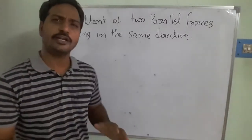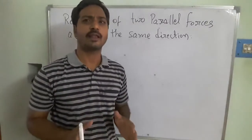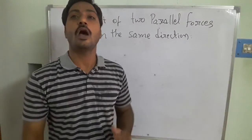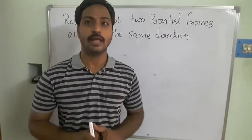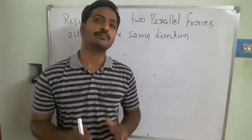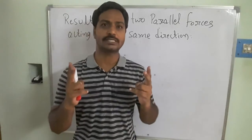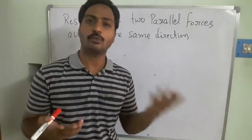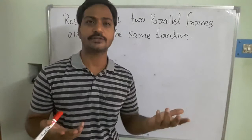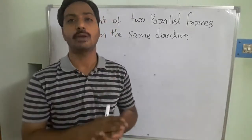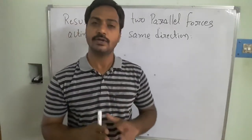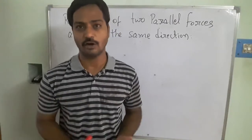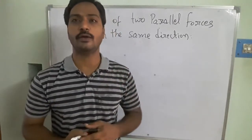After the discussion of the different types of parallel forces in the last video, we are now going to learn how to find the resultant component. As we know, when a body is subjected to two forces, it may not move in either one of the force directions — it will move in the resultant direction, as seen in the last class. For parallel forces also, we need to find the resultant component, and we have three types to consider.